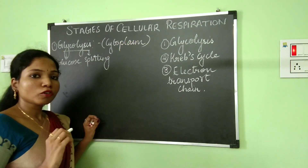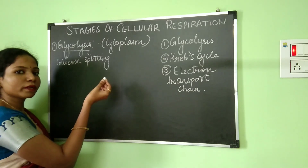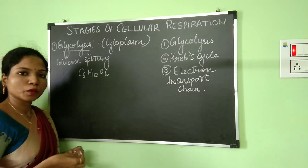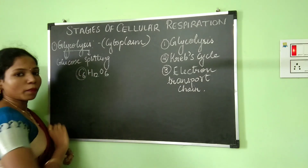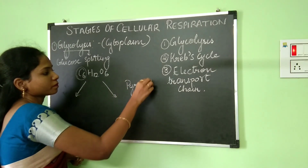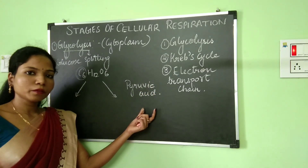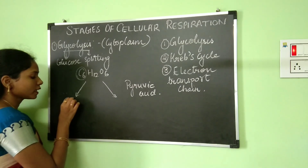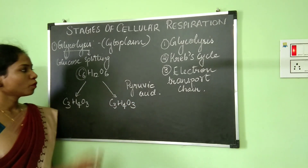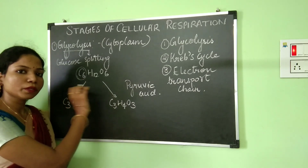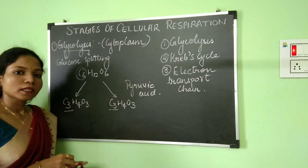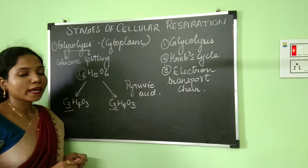During glycolysis, glucose — which is a 6-carbon compound with the chemical formula C6H12O6 — is going to be broken down into pyruvic acid, which is a 3-carbon compound. So one molecule of glucose, a 6-carbon compound, is broken down into pyruvic acid, a 3-carbon compound. Glycolysis is a common step for both aerobic as well as anaerobic respiration.